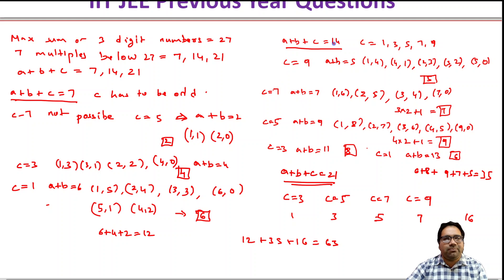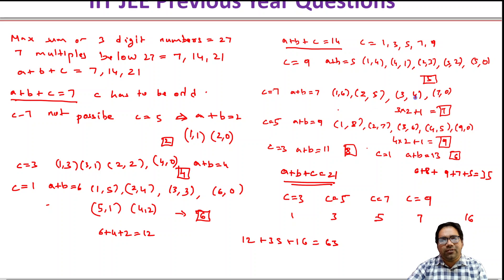When c equals 7, a plus b should equal 7. That gives pairs: (1,6), (6,1), (2,5), (5,2), (3,4), (4,3), and (7,0) — so 7 options.